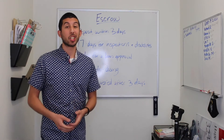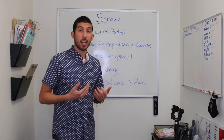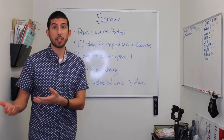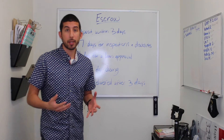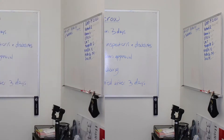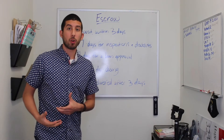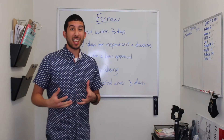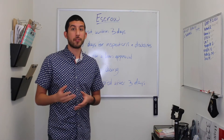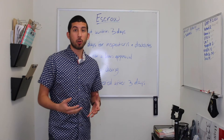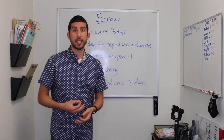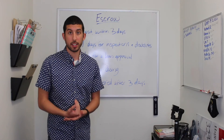Closings are anywhere from 30 to 45 days — it could take less time or more time to close escrow, but typically it falls between 30 and 45 days. After you close escrow, a seller will deliver keys three days after the close of escrow.